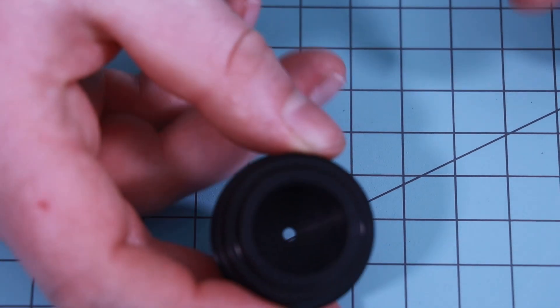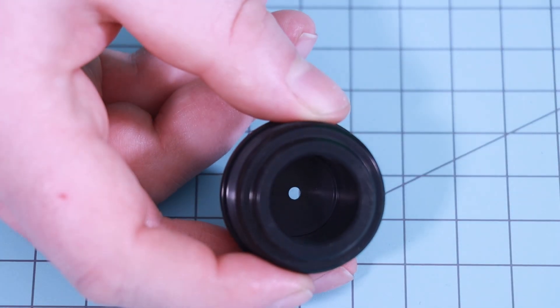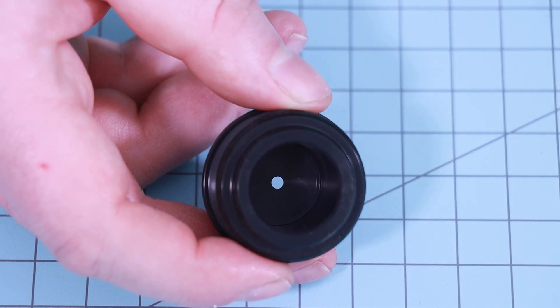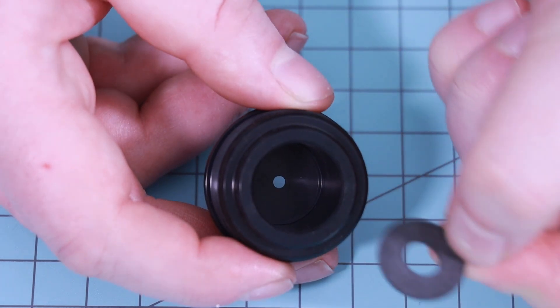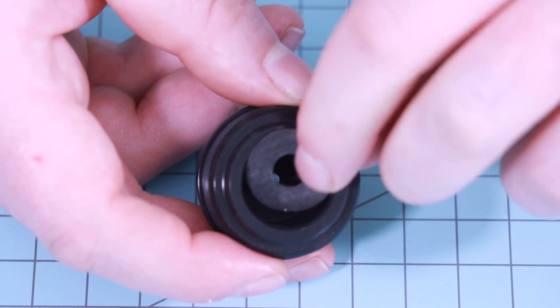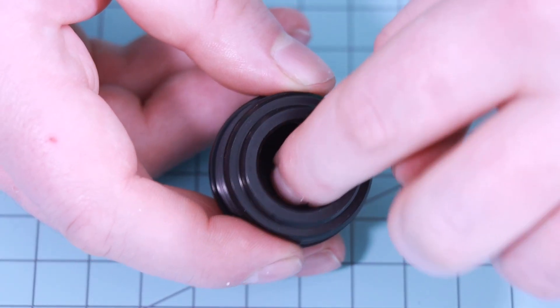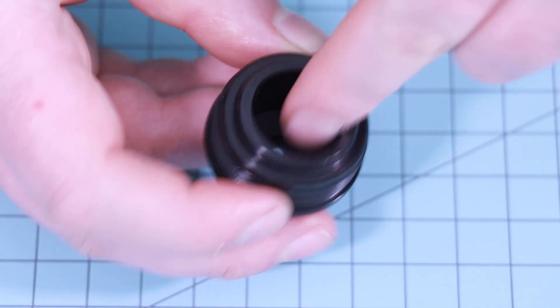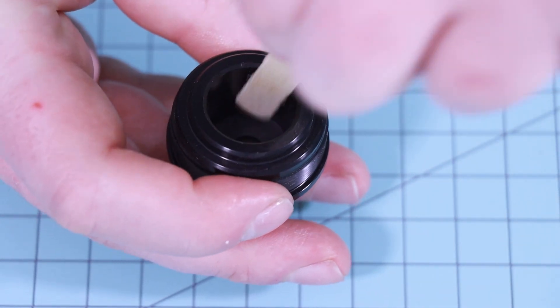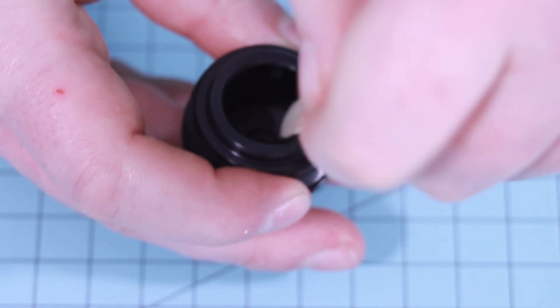Now let's grab the forward closure and insert the forward delay spacer, making sure it's fully seated without any wrinkles or gaps. Here I use a popsicle stick to make sure it's fully seated.